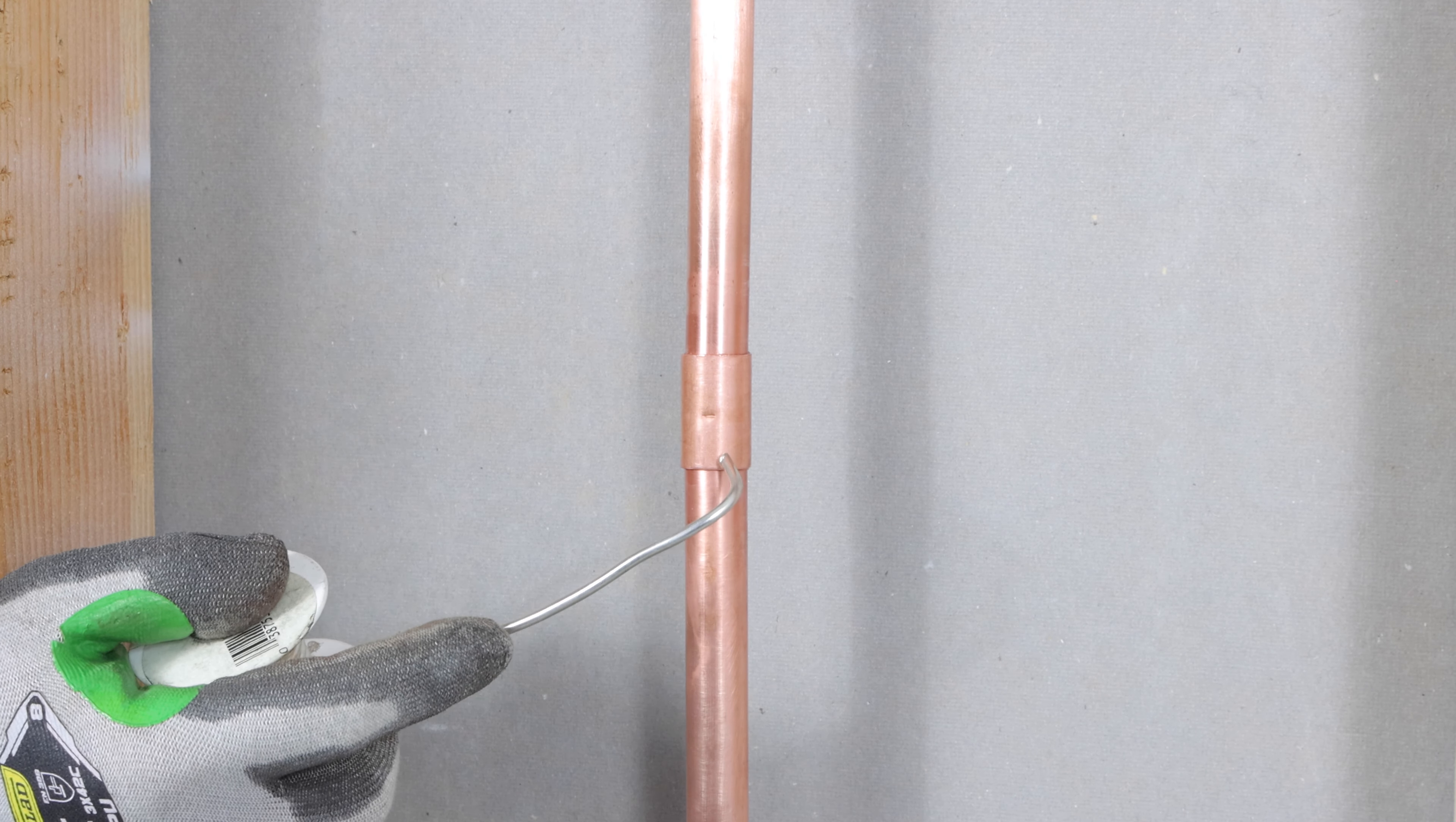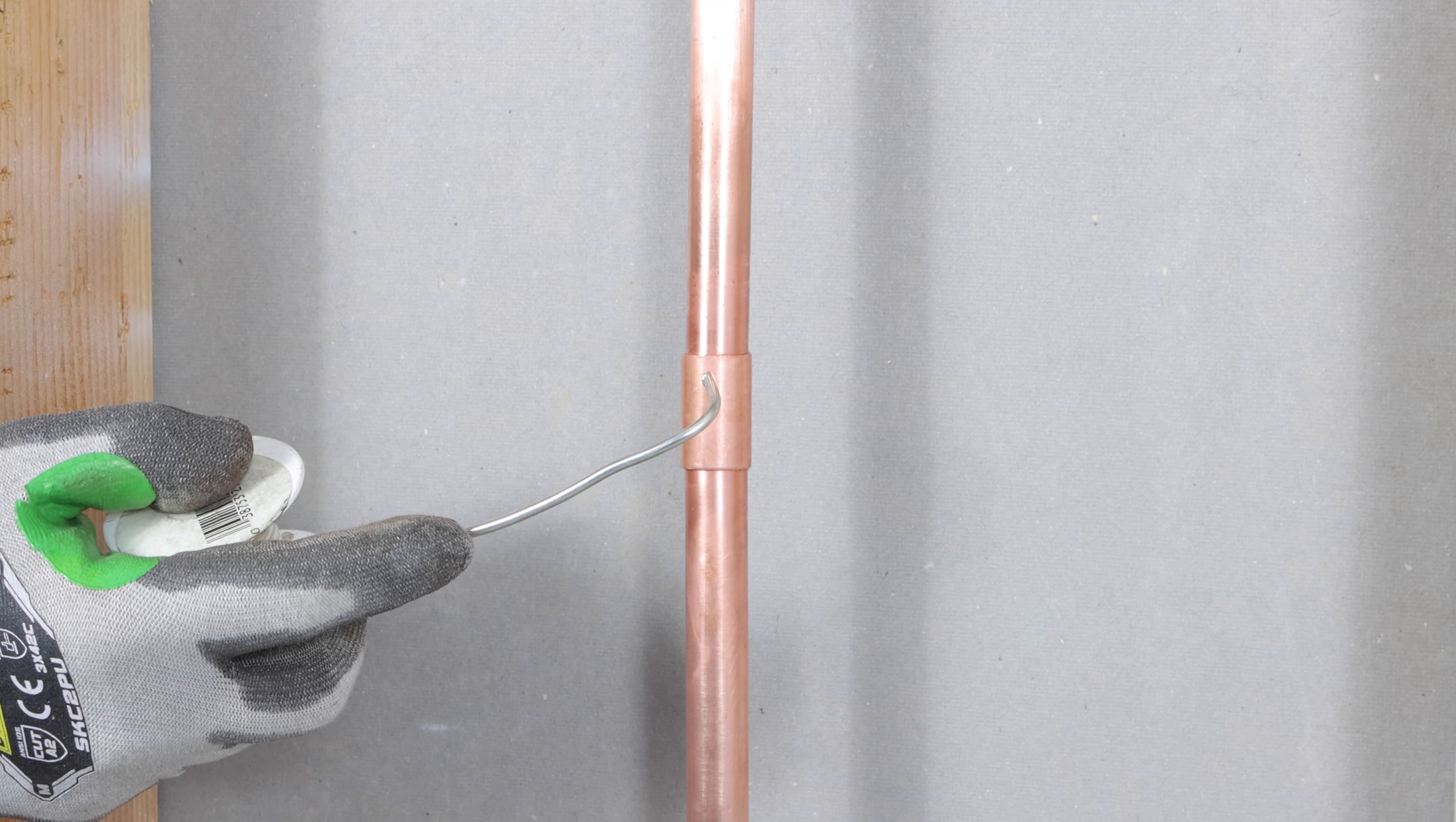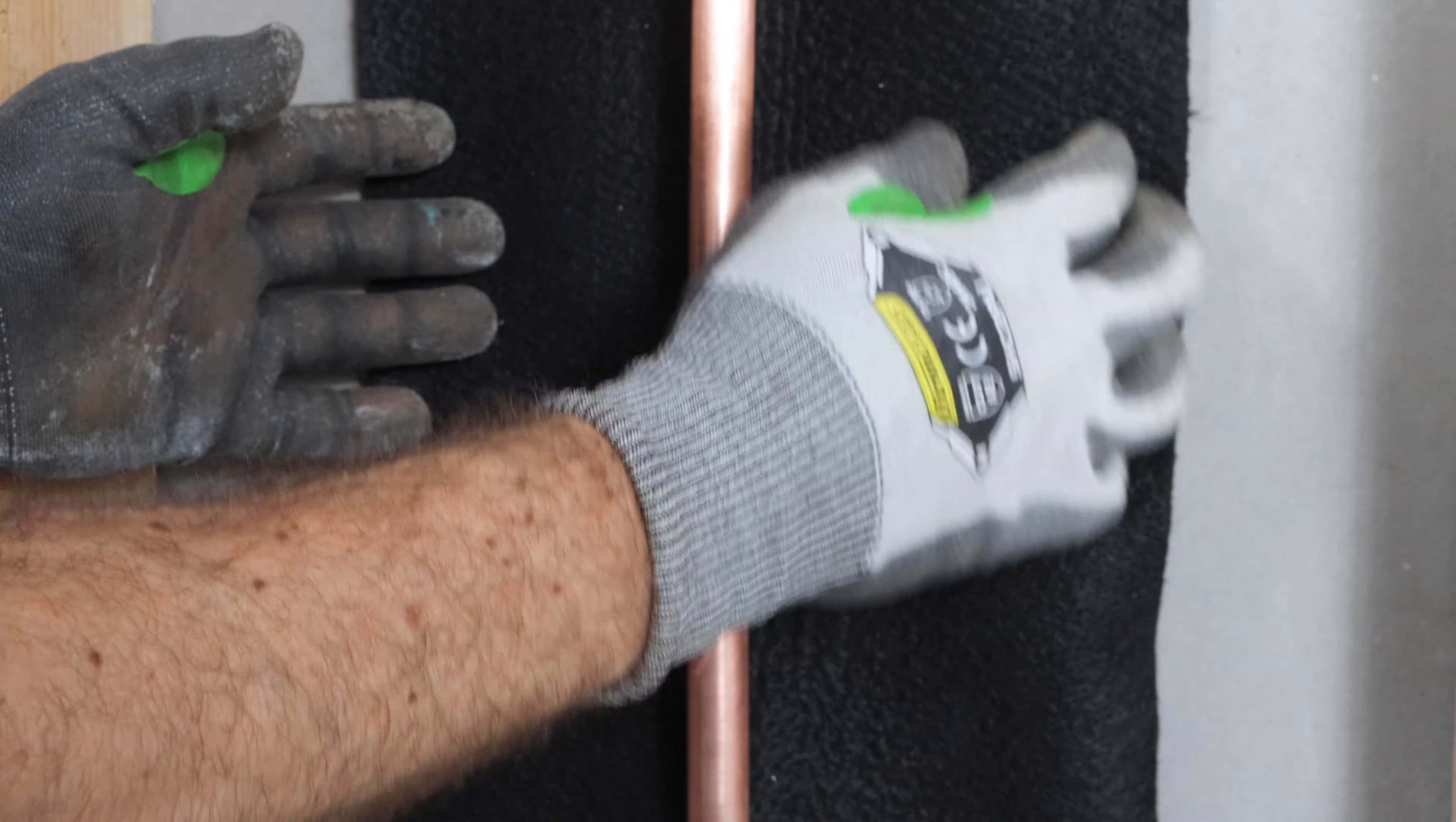The general game plan is to start by preheating the pipe, heating the coupling, and then by the time you get to the top, you're not really going to have to apply a lot of heat at all. I also like using a flame protector pad. I put that inside the wall.